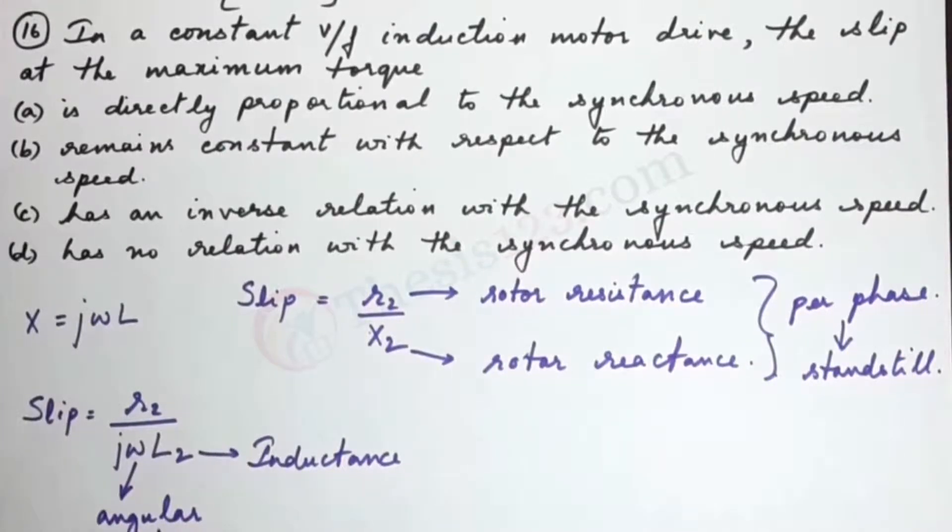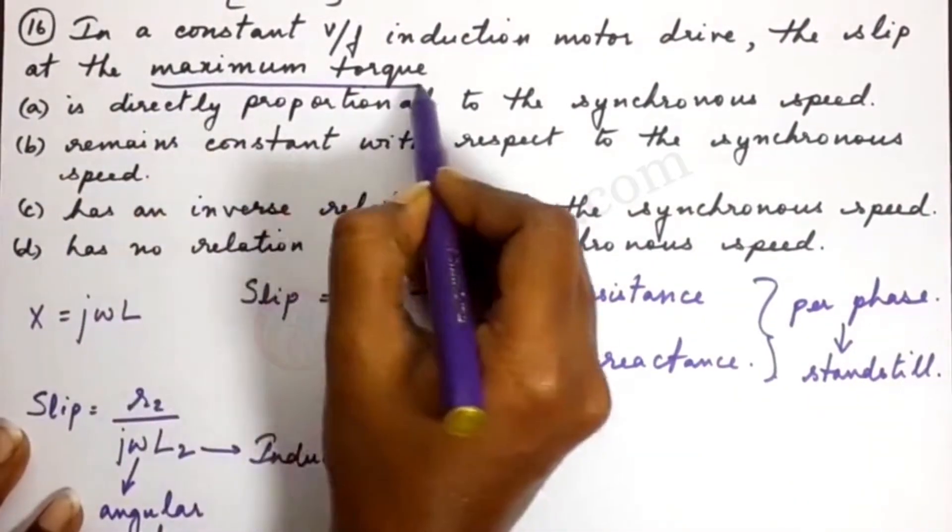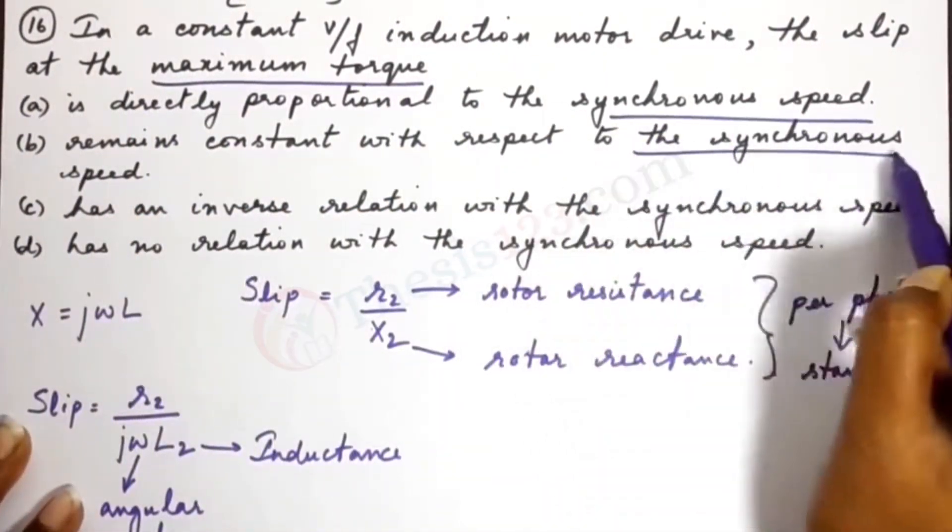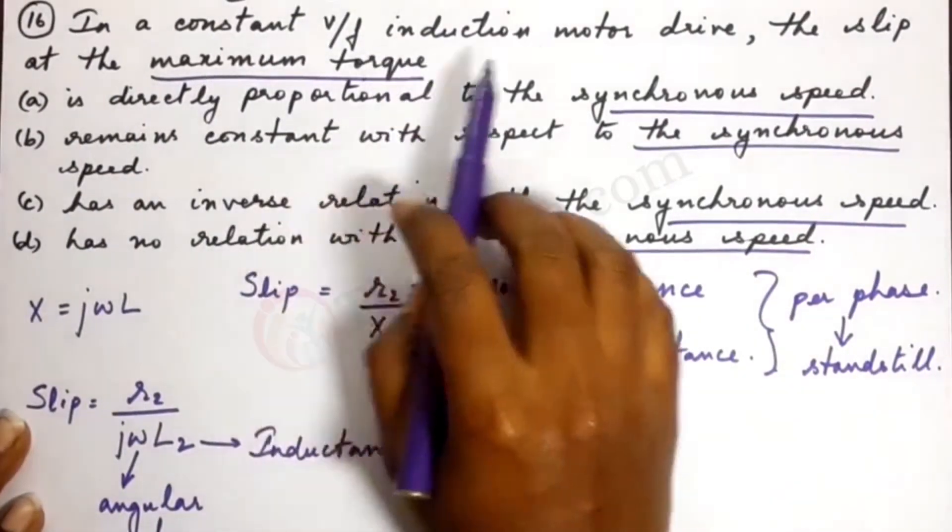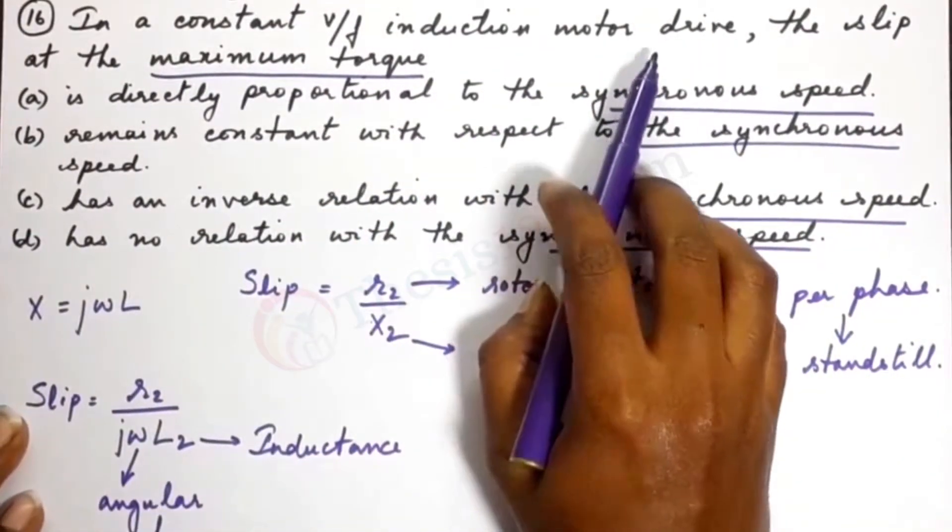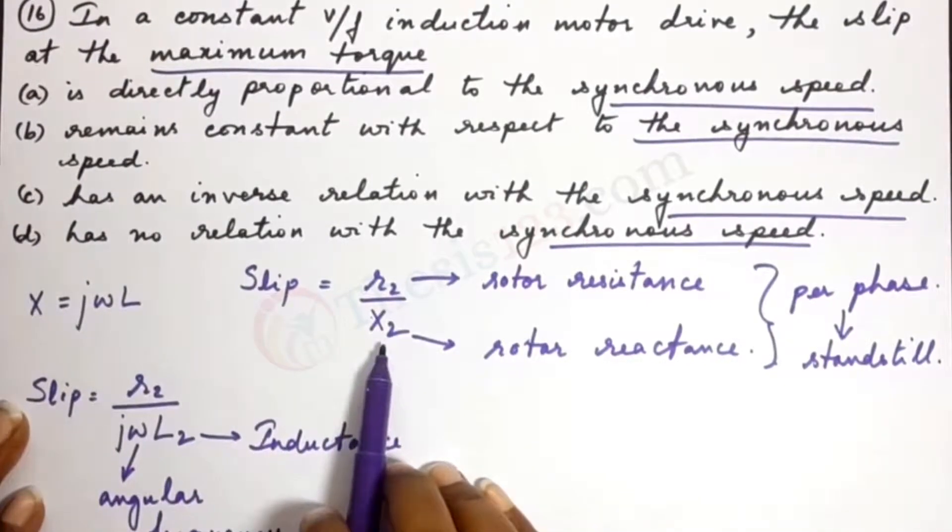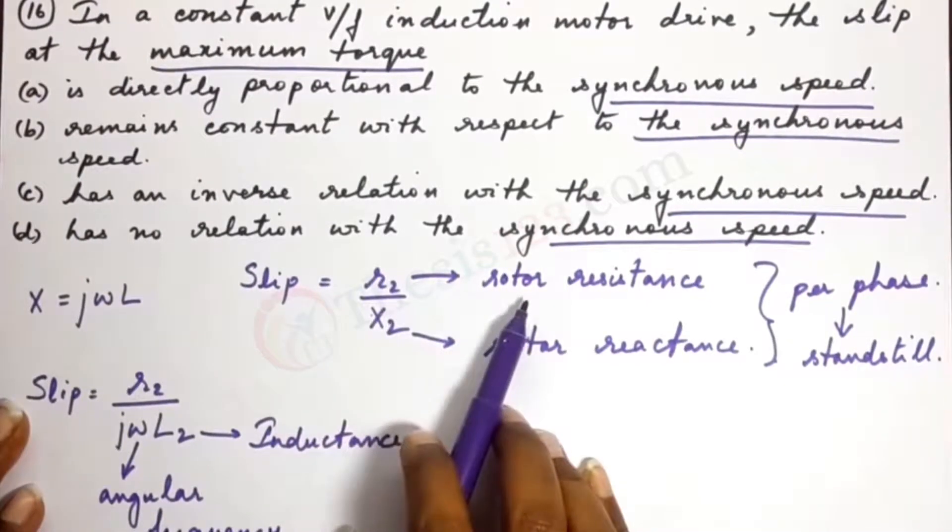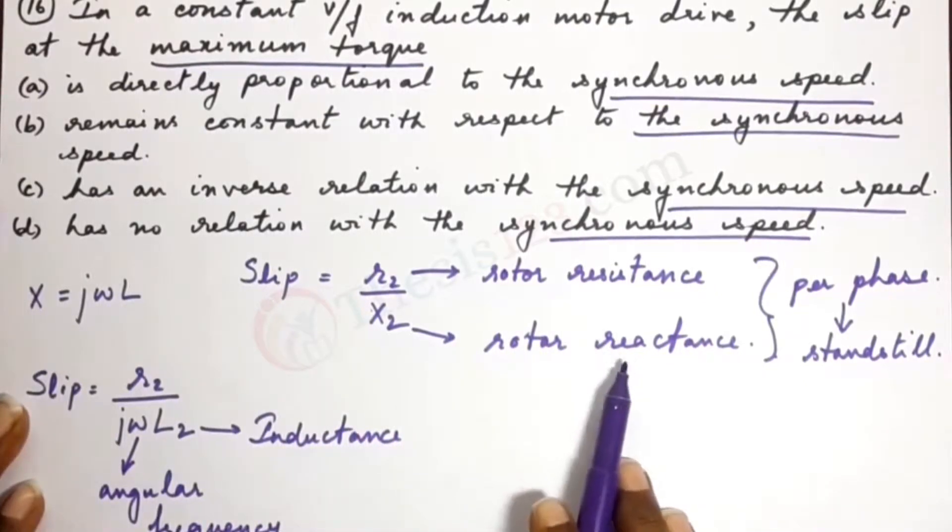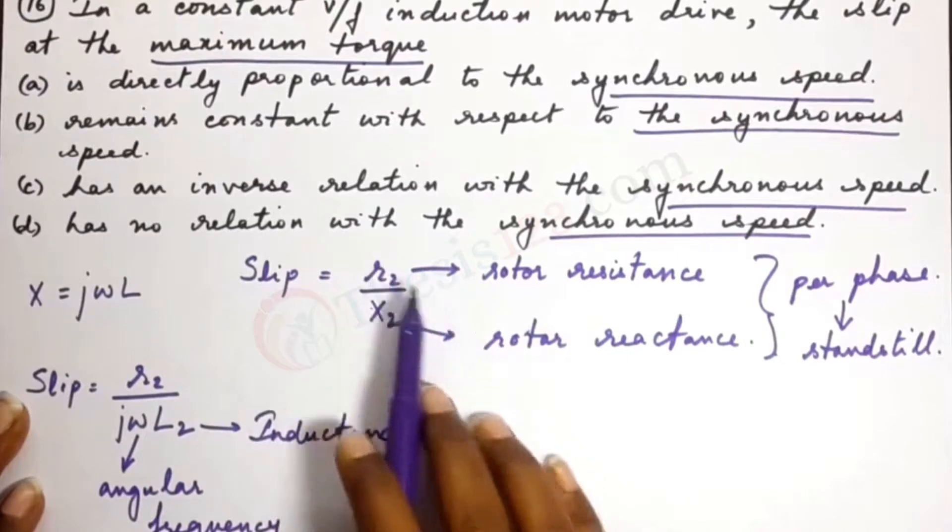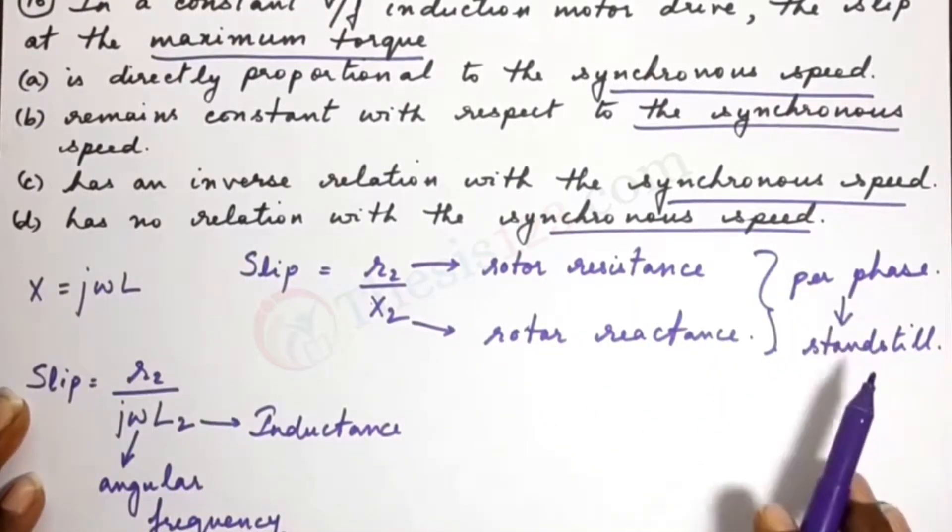When we talk about induction motor drive, the slip is written as R2 divided by X2, where R2 is the rotor resistance and X2 is rotor reactance. This ratio is per phase and the motor is at standstill.